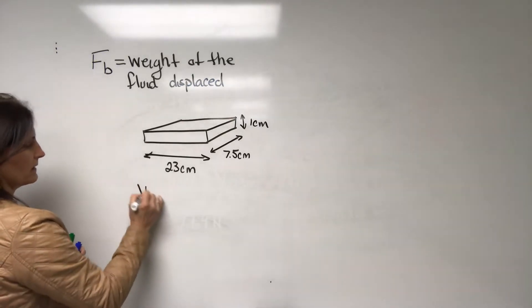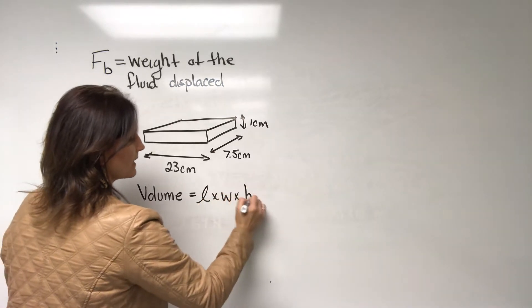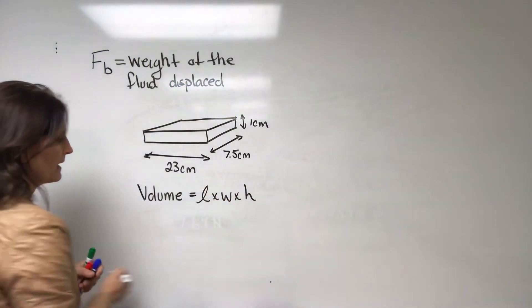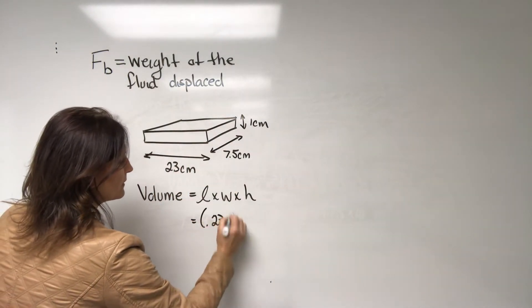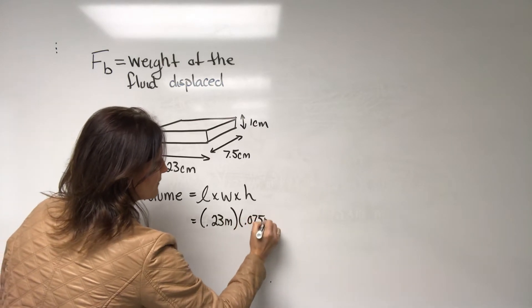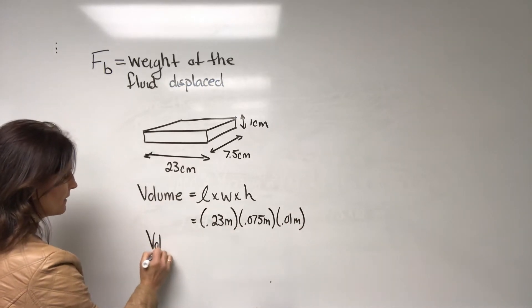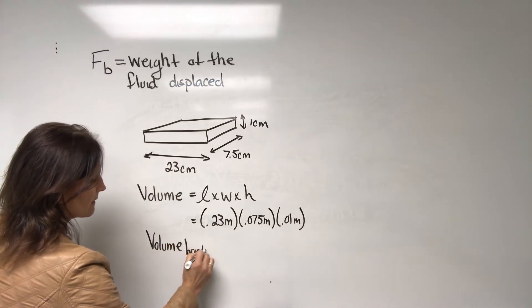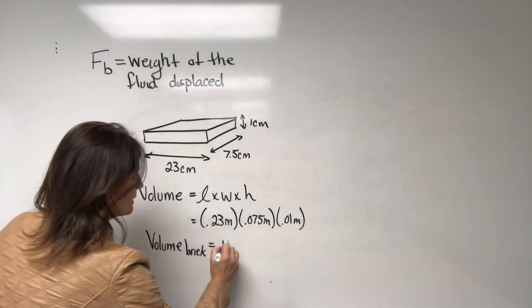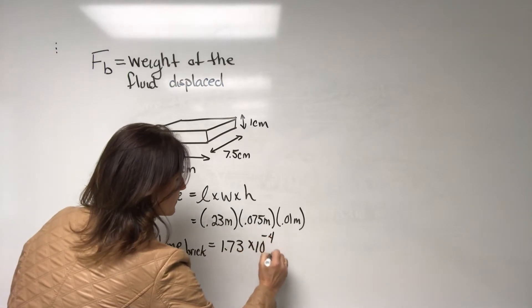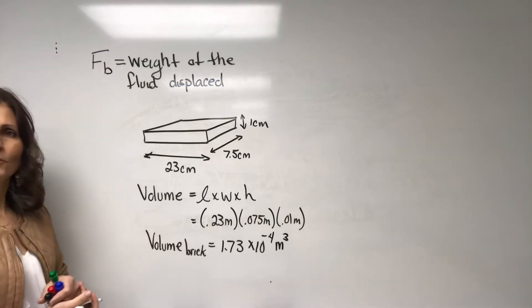So the volume of this brick is equal to the length times the width times the height. So the volume of any rectangular shape. So changing that to meters we can say that's 0.23 meters times 0.075 meters times 0.01 meters to give us the volume of the brick. Calculating that I get 1.73 times 10 to the minus 4 meters cubed. Alright. So keep that in mind. That's the volume of our brick.